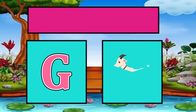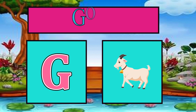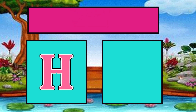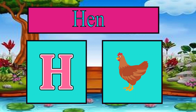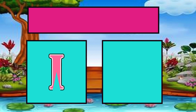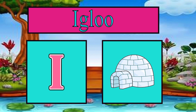G is for goat, g-g-goat. H is for hand, h-h-hand. I is for igloo, i-i-igloo.